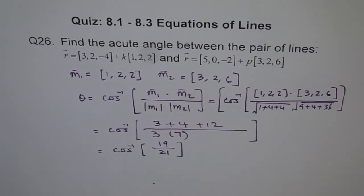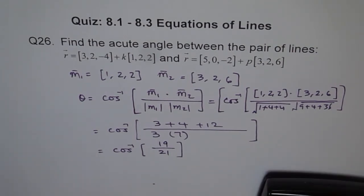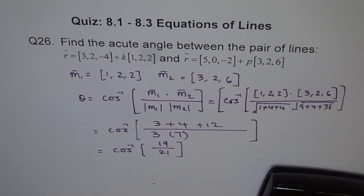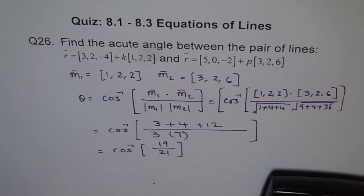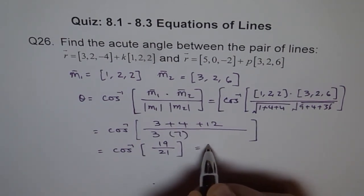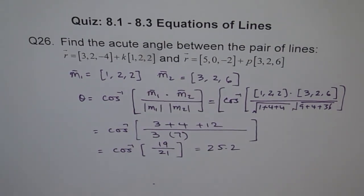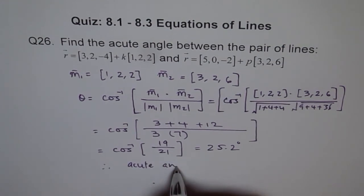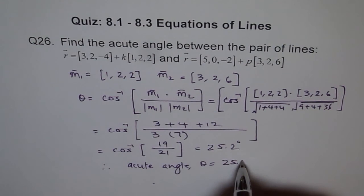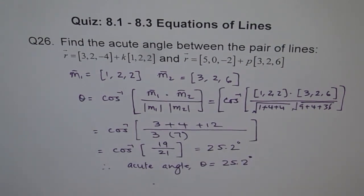Now you can use a calculator to find the angle. So cos inverse of 19 divided by 21 equals 25.2087 degrees. So we get 25.20 degrees. Therefore, the acute angle is theta equals 25.20 degrees. That's the answer for this. Thank you.